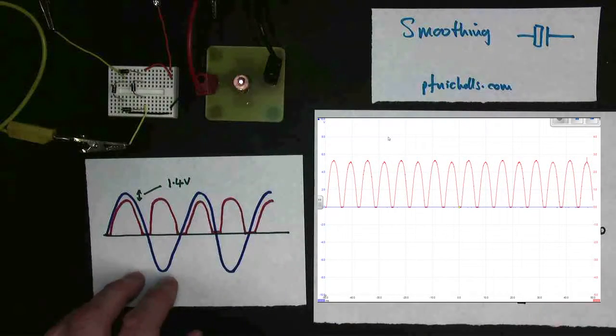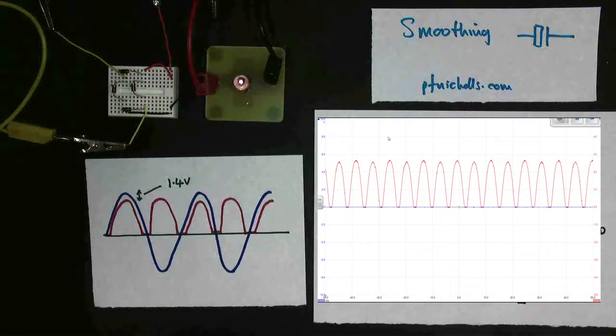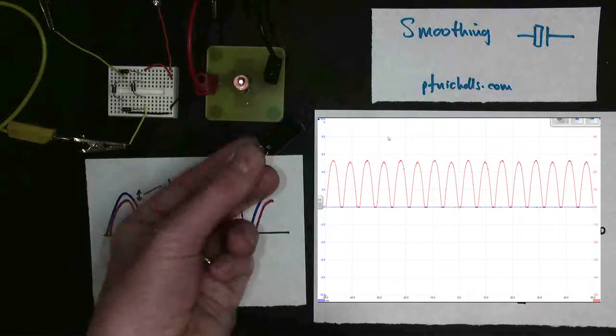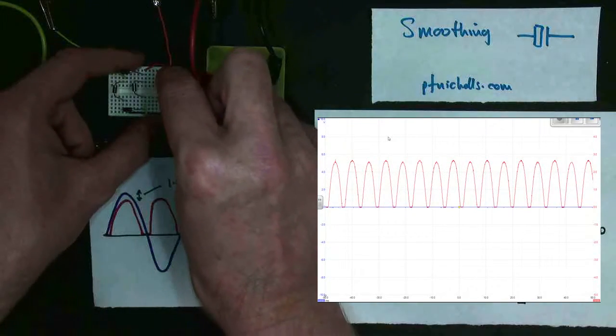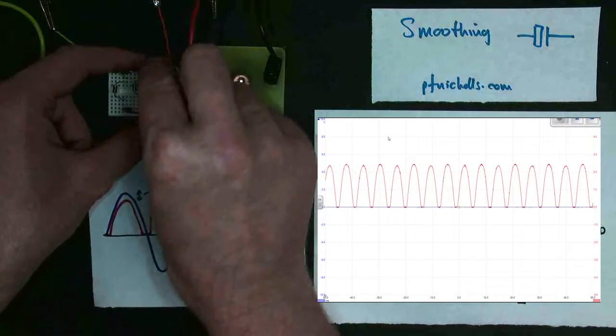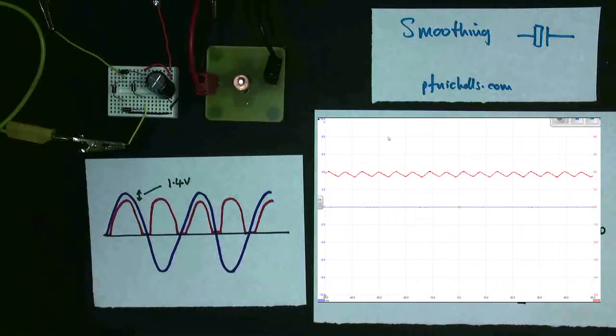So what I'd like to do is I'd like to fill in these holes. I'd like to fill in these gaps here. So I need something to store some electricity. And of course, for that, I can use a capacitor. So if I put a capacitor on here, let's see what we notice. Well, with the bulb, you notice very little indeed.